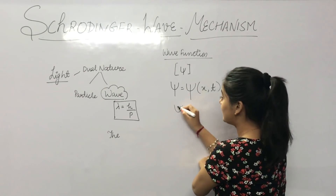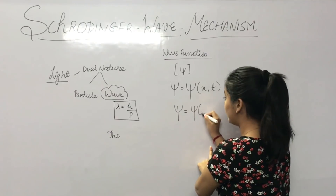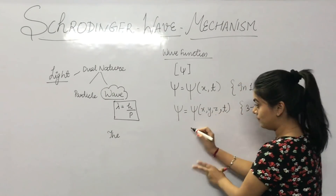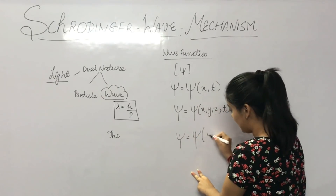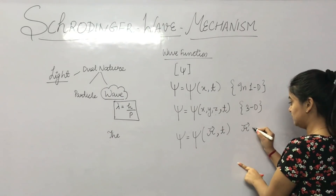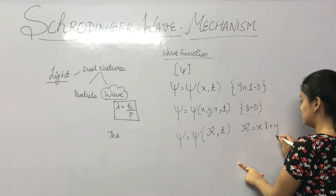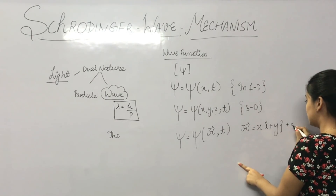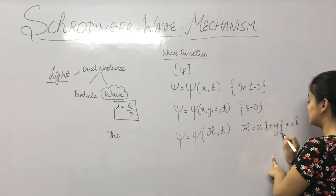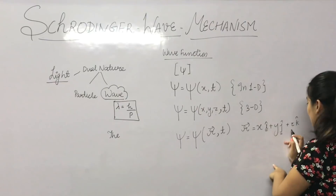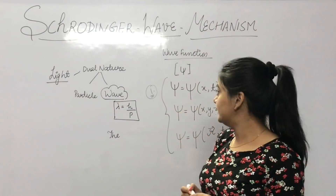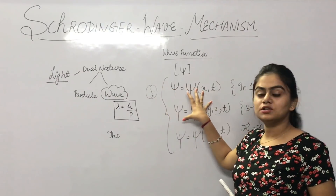In 3D we can write it as Psi is a function of x, y, z and t. We can combine x, y, z into a position vector R, so Psi is a function of R vector and t. R is the position vector, equal to x i-cap plus y j-cap plus z k-cap. i-cap is the direction in x, j-cap in y, and k-cap in z direction.